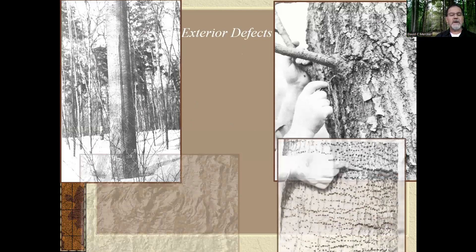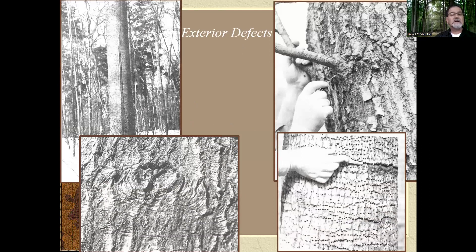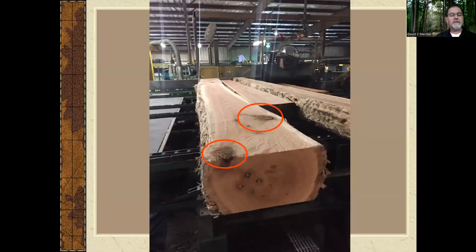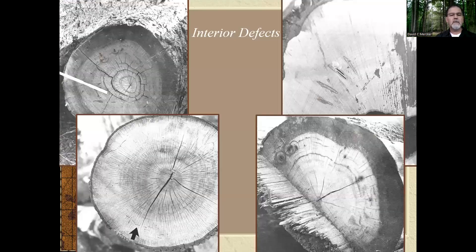Here are some exterior grade defects, beginning in the upper left and continuing clockwise: we see a seam caused by lightning or frost, epicormic branching in the upper right, bird peck in the lower right, and a standard knot in the lower left. Notice what exterior grade defects look like once the log has been cut open — they're not very apparent on the surface, but they become very apparent once it's open. Here are some interior grade defects: loose heart — that separation of growth rings — spot worm in the lower right, mineral stain, and pinworm holes. Very difficult to see, but these defects become apparent once the log has been cut up.